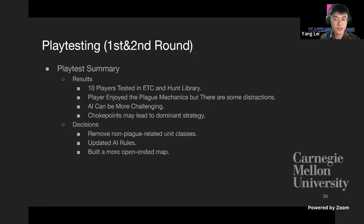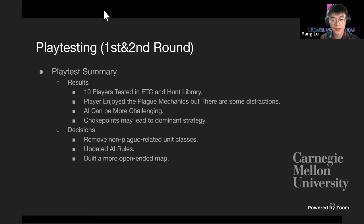In the initial playtests, 10 players tested the game at the Hunt Library. Players enjoyed the game but some thought it could be more challenging and found they were adopting a dominant strategy. Decisions made as a result: removing non-plague-related units, updating AI rules to make the game more challenging, and building more open-ended maps so the previous dominant strategy wouldn't be as effective.